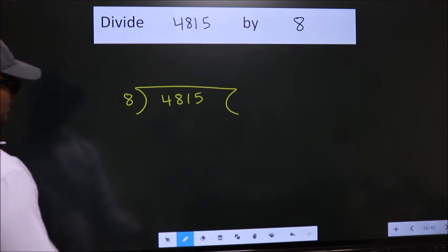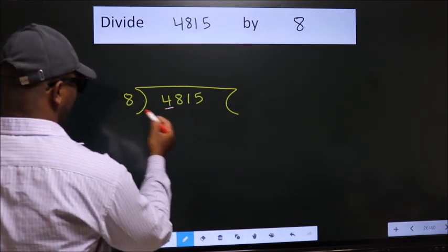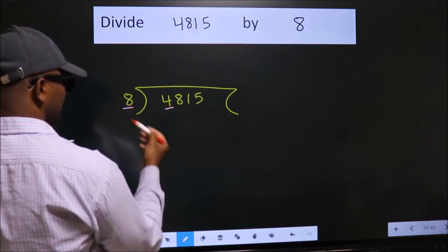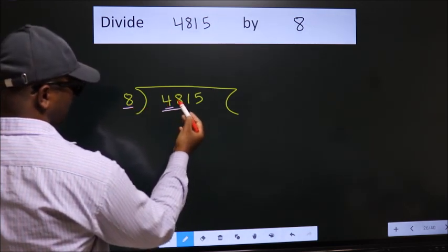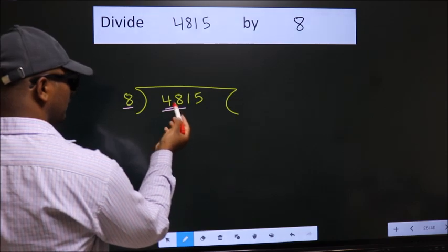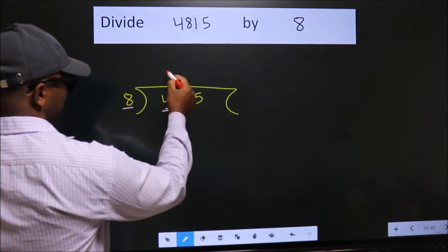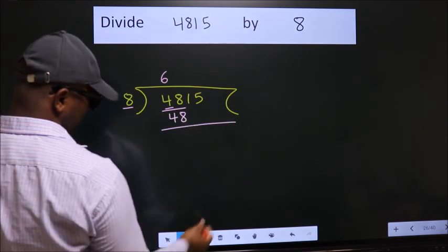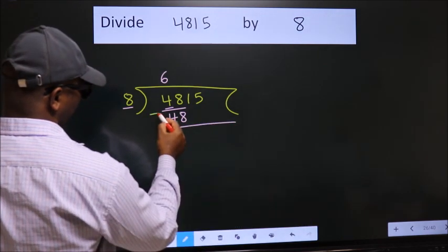Next, here we have 4, here 8. 4 is smaller than 8, so we should take two numbers: 48. When do we get 48 in the 8 table? 8 times 6 is 48. Now we should subtract. We get 0.